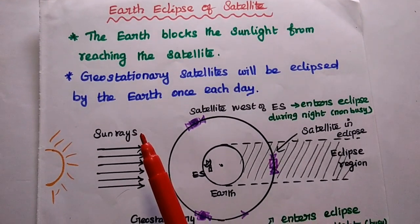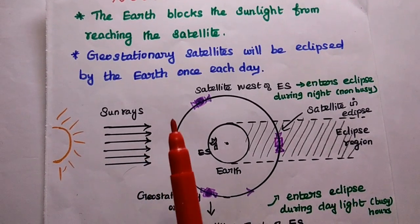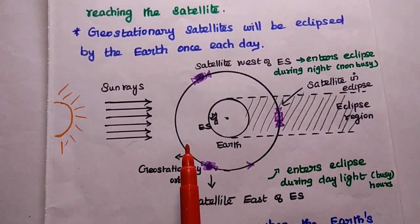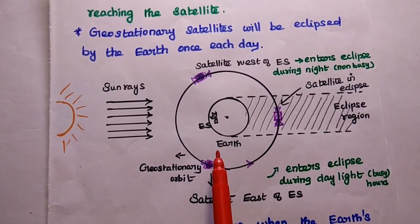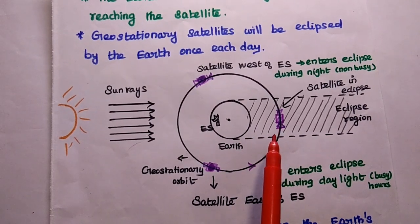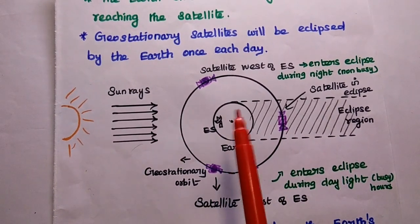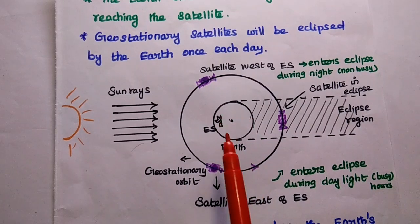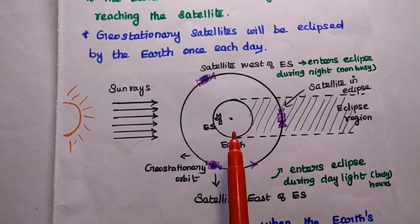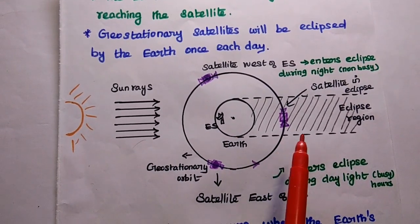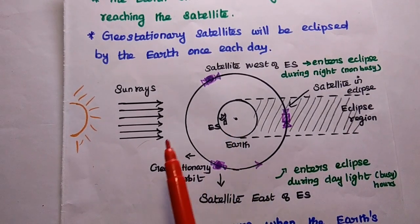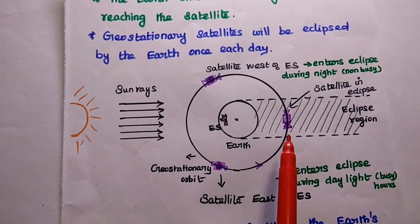Geostationary satellites are widely affected by the earth eclipse once each day. From the diagram, we can understand the concept clearly. Whenever the satellite falls behind the earth, and at the same time the sun, the equatorial plane of the earth, and the geostationary orbital plane are all aligned together, we get the eclipse region — the earth is blocking the sun rays from reaching the satellite.